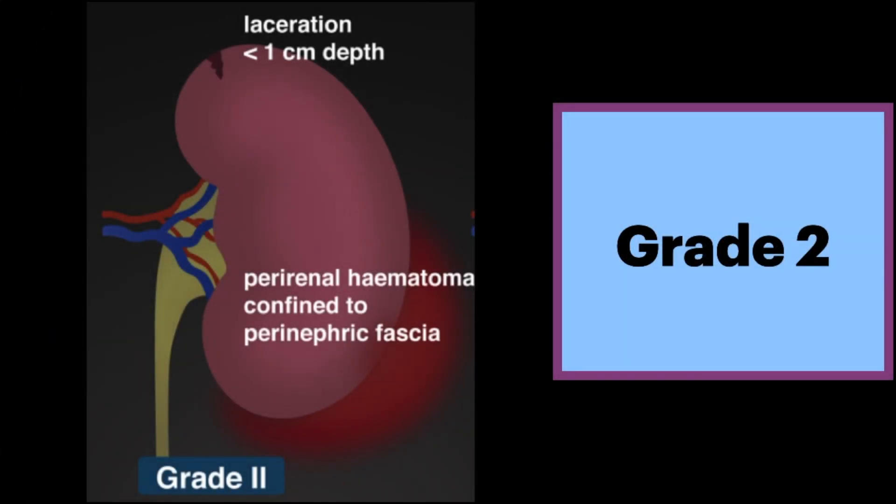Next is a grade 2 injury. There is a laceration with a superficial cortical defect less than 1 cm, typically linear and hypoattenuating. There is no associated collecting system injury. If there is a hematoma, it's confined to the perinephric fascia. Blood dissecting along the perinephric septa results in stranding or cobwebbing.